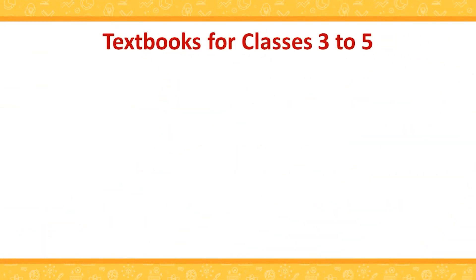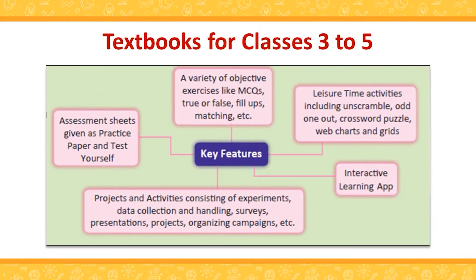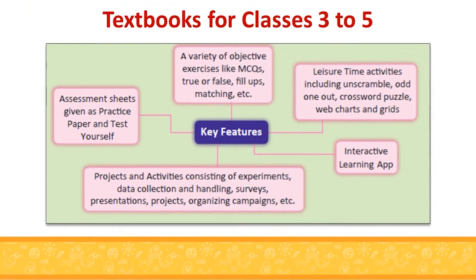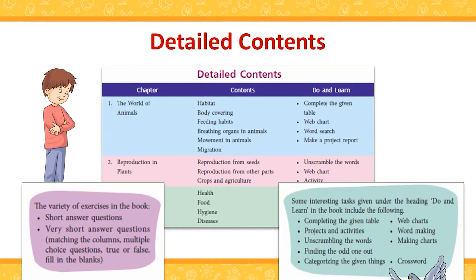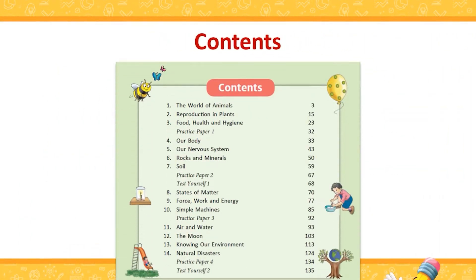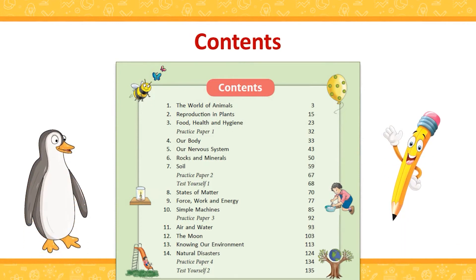Now let's have a look at different features for classes 3 to 5. Just like Startup Science 1 and 2, detailed contents in classes 3 to 5 are given at the beginning of the textbook that give an insight to the contents, a variety of in-text and chapter-end exercises, and the creative tasks covered in each chapter. A list of chapters and worksheets is provided in the content section.